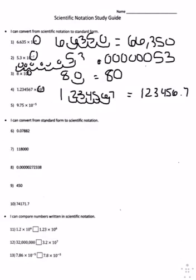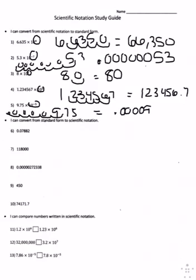For number five, you're going to move the decimal five times, and you end up with .0000975.